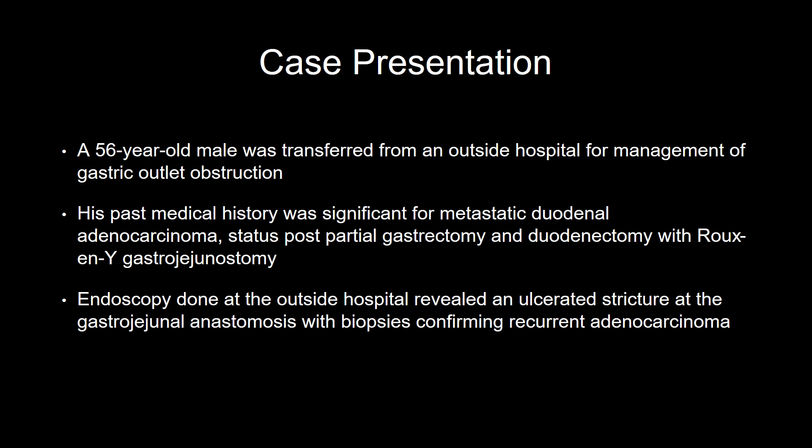A 56-year-old male was transferred from an outside hospital for management of gastric outlet obstruction. His past medical history was significant for metastatic duodenal adenocarcinoma, status post-partial gastrectomy and duodenectomy with Roux-en-Y gastrojejunostomy. Endoscopy done at the outside hospital revealed an ulcerated stricture at the gastrojejunostomy, with biopsies confirming recurrent adenocarcinoma.